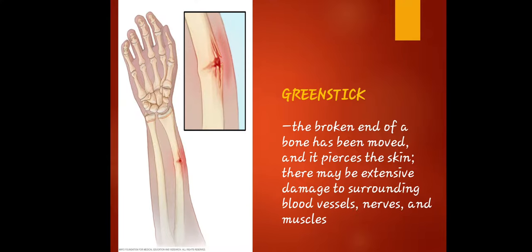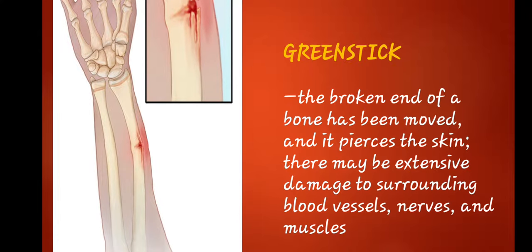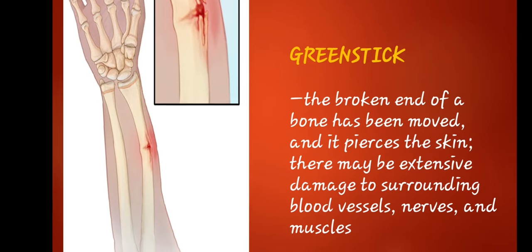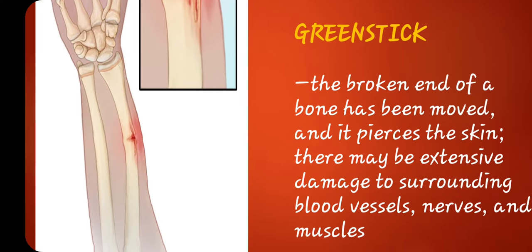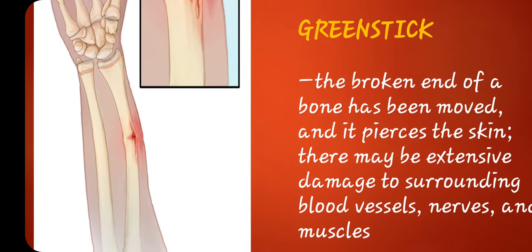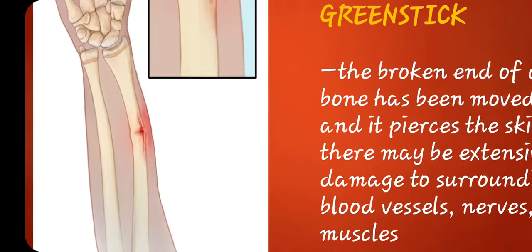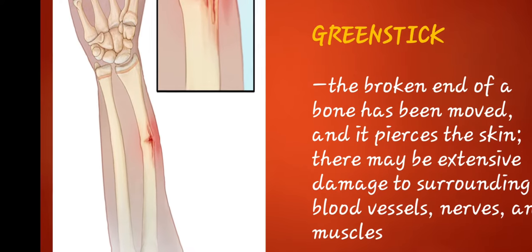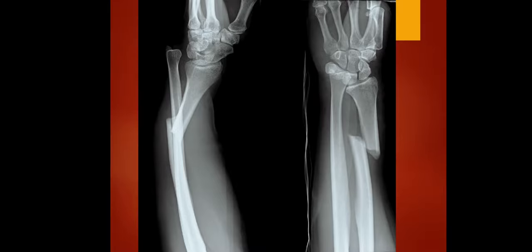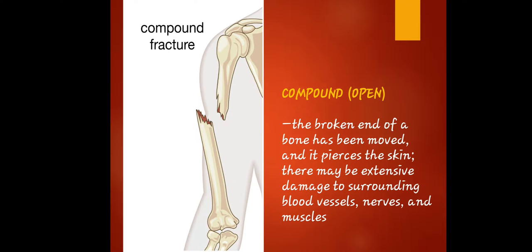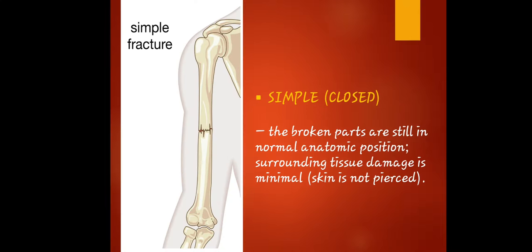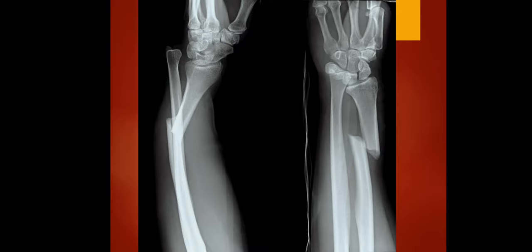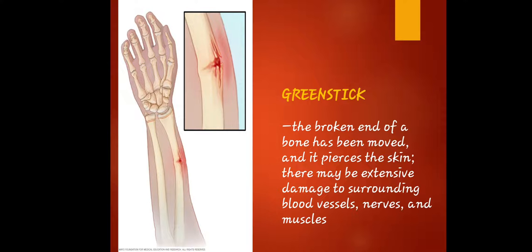Next is the green stick fracture. The broken end of the bone has moved and it pierces the skin. There may be extensive damage to surrounding blood vessels, nerves, and muscles. Not only the bone can be damaged — the skin is also affected in this type of fracture. Comparing it to compound fracture, in green stick the bone is not severely displaced, but it can affect your skin.